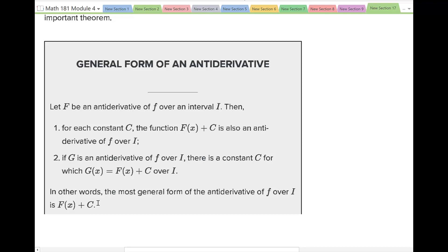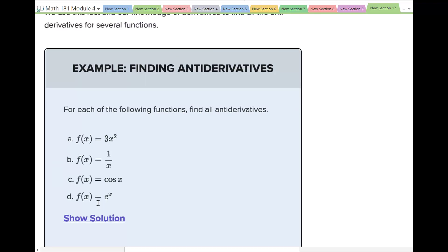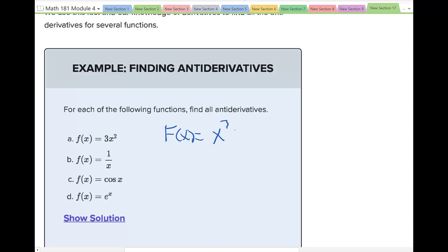Let's look at some antiderivatives. We have f(x) = 3x². Think about what happened to make it 3x². Our capital F(x): we bring the power out front and subtract 1 from the power, so that 3 out front came from differentiating x³, and the power would have been 3 before. So capital F(x) = x³ plus C.